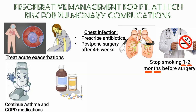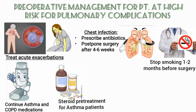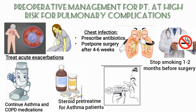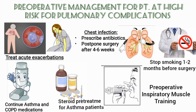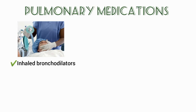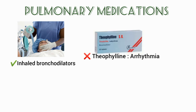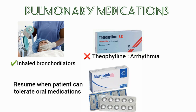Smokers should be advised to stop smoking one to two months prior to surgery. Asthma and COPD patients should continue their regular medications, and asthma patients are also given pre-treatment with steroids to reduce post-operative complications. Pre-operative inspiratory muscle training is effective in improving respiratory muscle function in high-risk patients, and inhaled bronchodilators are given perioperatively to reduce the risk of bronchospasm.